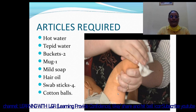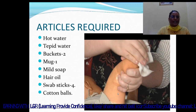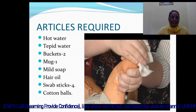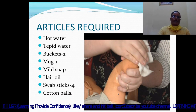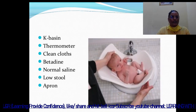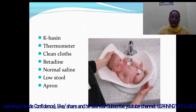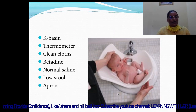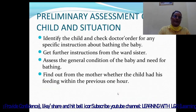Articles required for the baby bath procedure: hot water, tepid water, two buckets, one mug, mild soap, hair oil, four swab sticks, and cotton balls. Also required: a kidney basin, thermometer, clean clothes, betadine, normal saline, a low stool, and an apron.